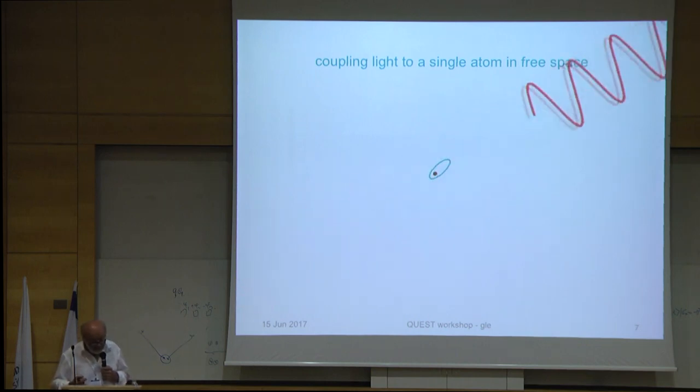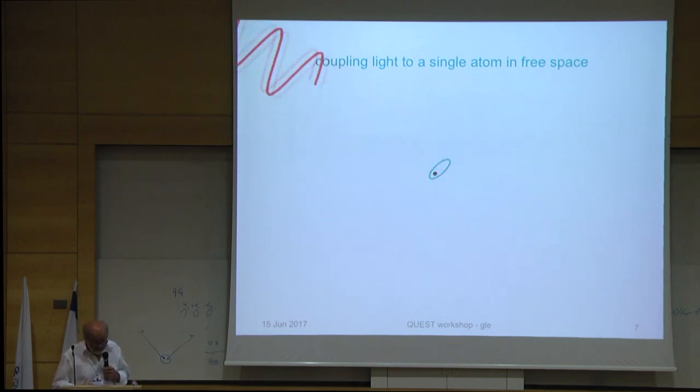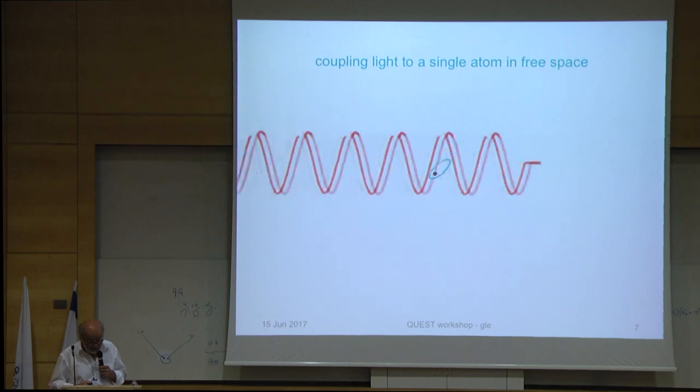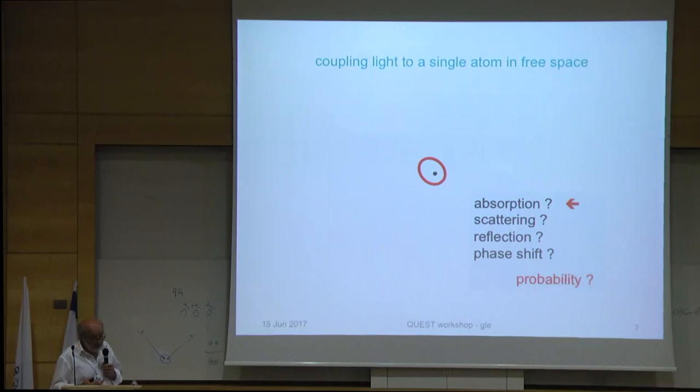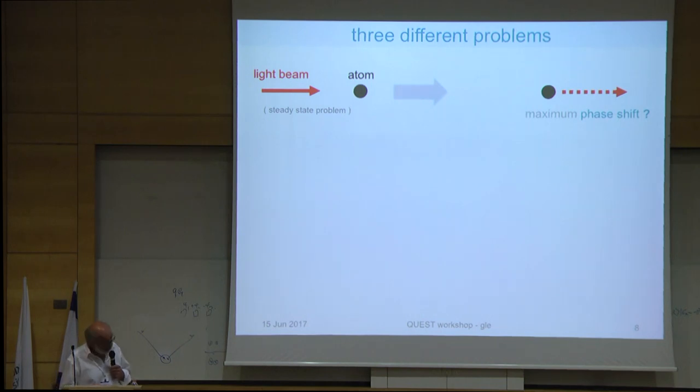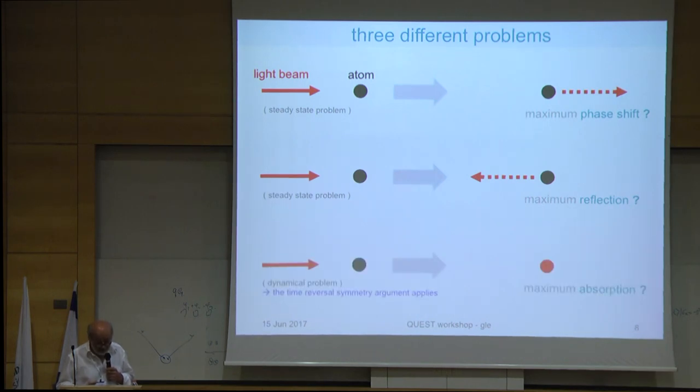The quest here is that if you have an atom and you expose it to light, sometimes it does not get excited, but sometimes it does. The question is: what is the absorption probability? What about the probability for scattering backward and forward? How about the phase shift that is imposed? Is it possible to go to the extremes?